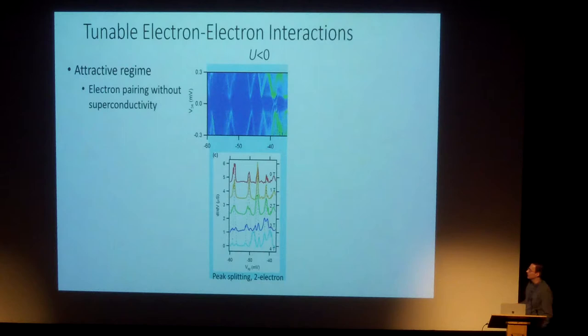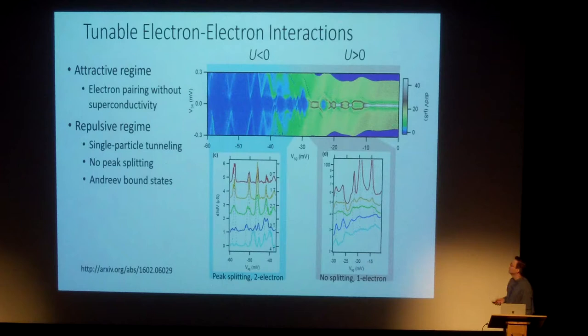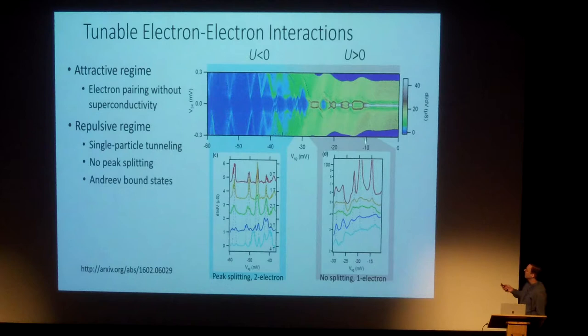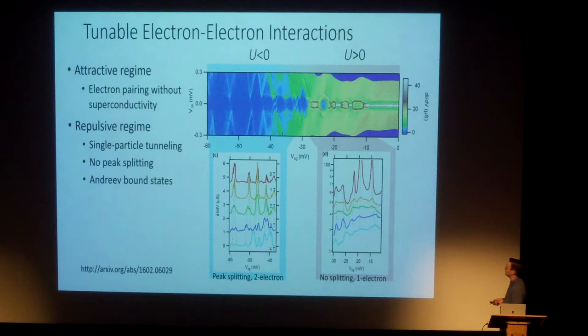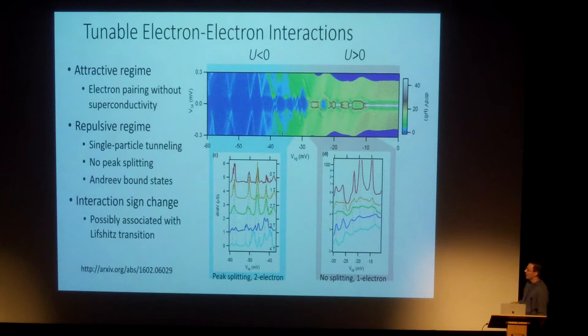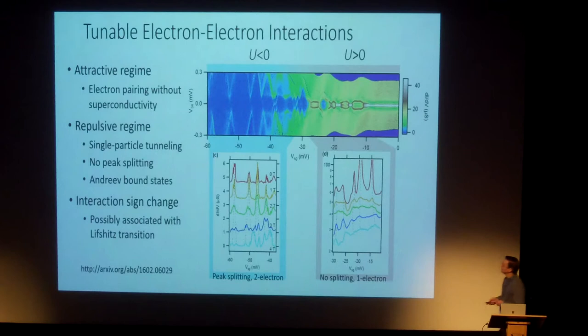Looking at the higher-density regime in collaboration with Andrew Daley, we find that the interactions which were attractive at low density suddenly and rather abruptly change sign. We enter a repulsive regime characterized by the emergence of Andreev bound states and a lack of splitting of those states in a magnetic field. We believe this sign change is linked to the onset of new bands at a Lifshitz transition.